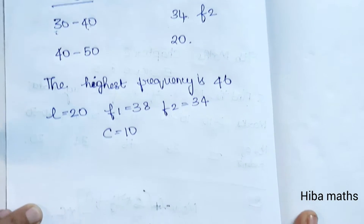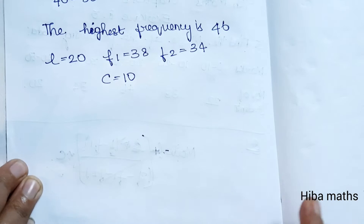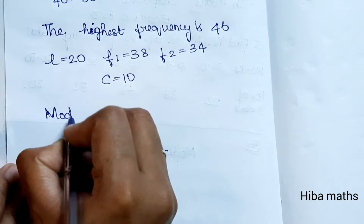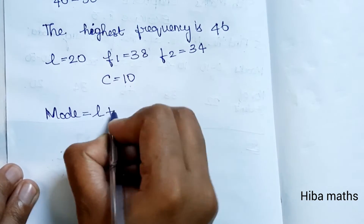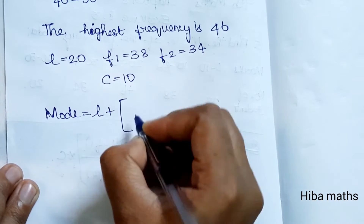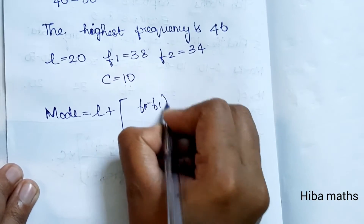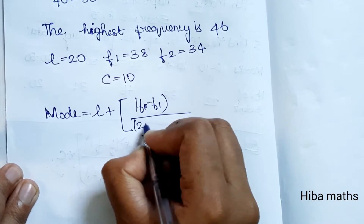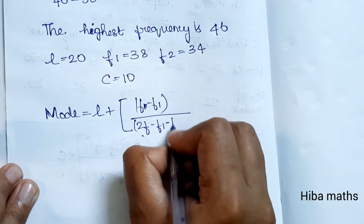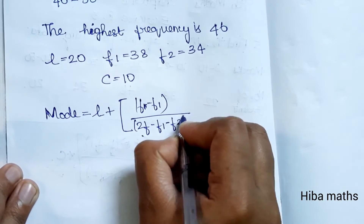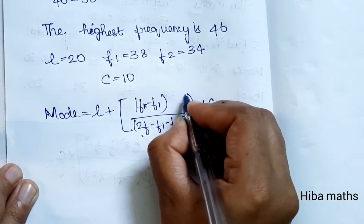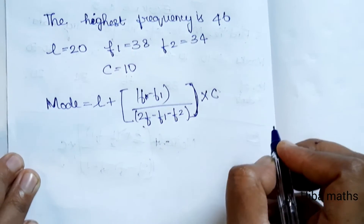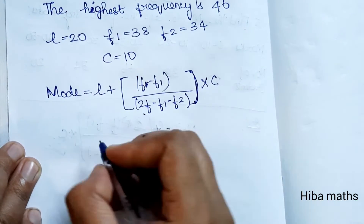Now we apply the formula. Mode is equal to L plus F minus F1, divided by 2 times F minus F1 minus F2, into C. Substituting: Mode equals 20 plus 46 minus 38, divided by 2 into 46 minus 38 minus 34, into 10.